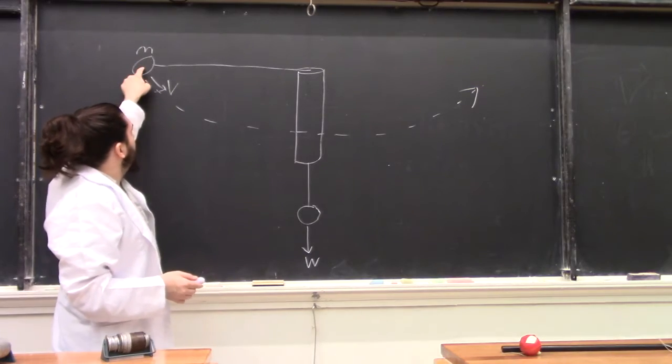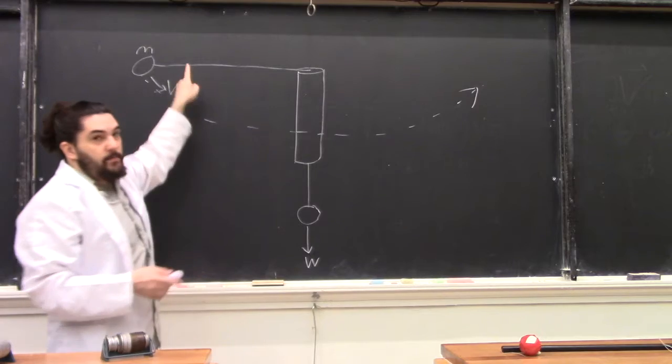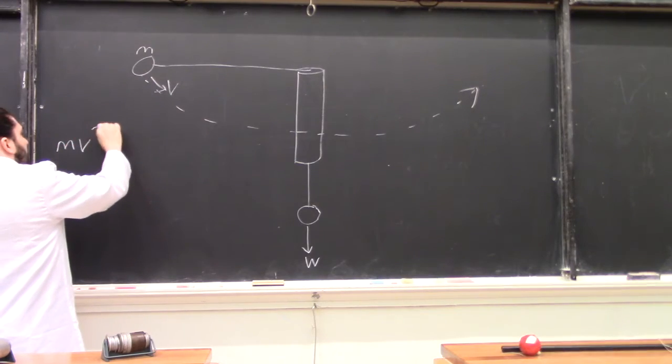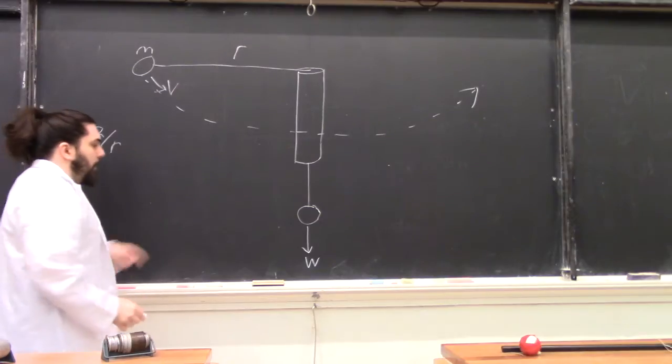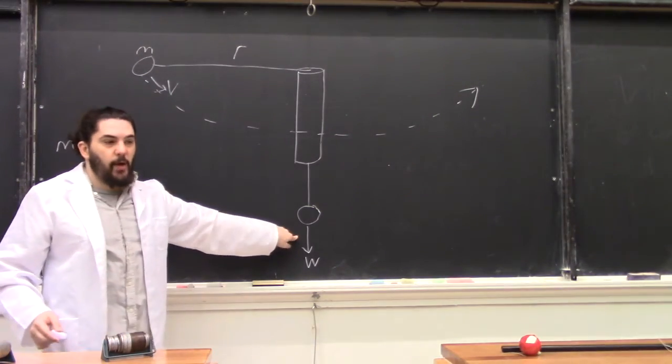So if we have a little mass spinning around on a string, mv squared over r, and that's counteracted by w, the weight of the heavy mass.